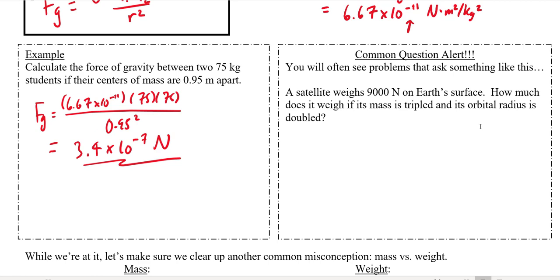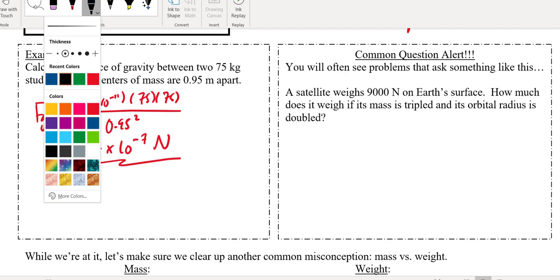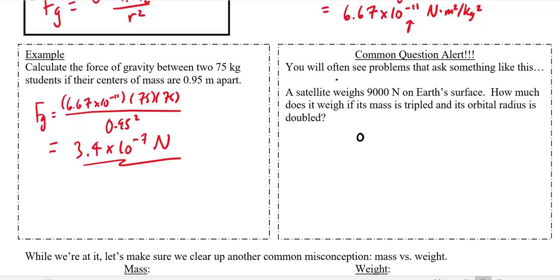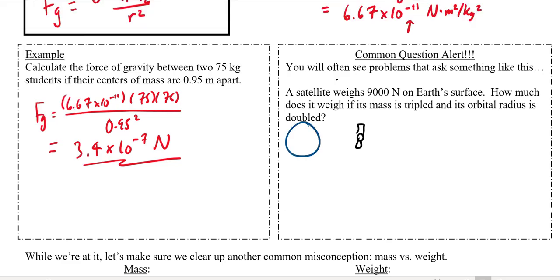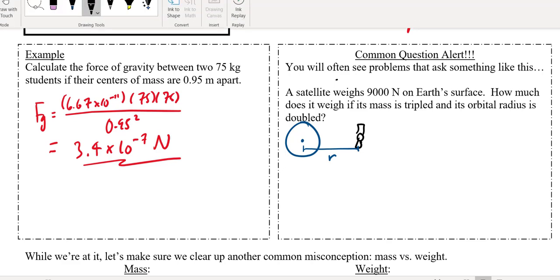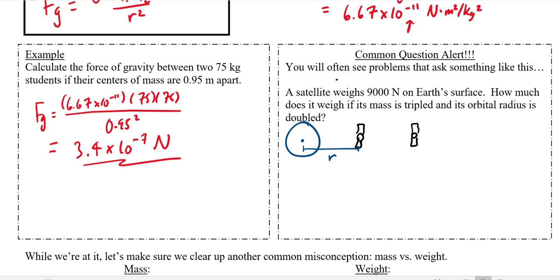One thing we'll look at here is a proportional reasoning problem. A question like this might ask: a satellite weighs 9,000 newtons on Earth's surface. How much does it weigh if its mass is tripled and its orbital radius is doubled? I'm just going to draw a little picture here because they haven't given us enough numbers to actually calculate anything. So I've got a satellite orbiting the Earth, and remember that the r value is going to be the distance from the center of the Earth to the center of the satellite. The mass is going to be tripled and the r value is going to be doubled, so now I've got an r value of 2r and I went from a mass of m to a mass of 3m.